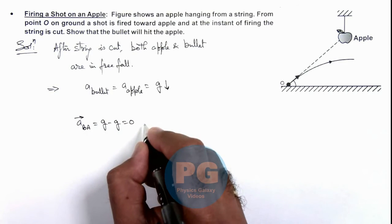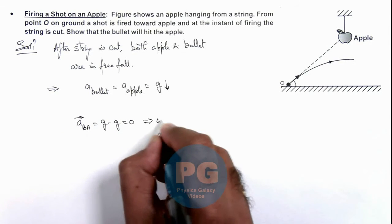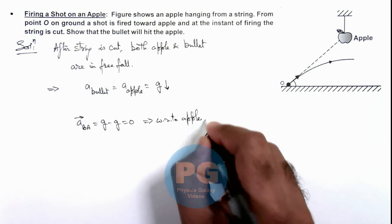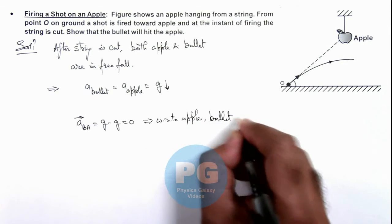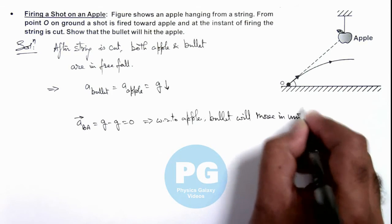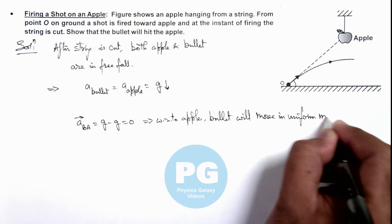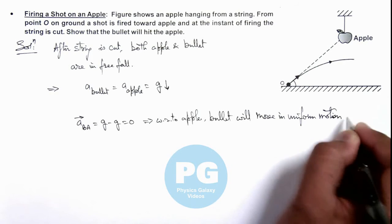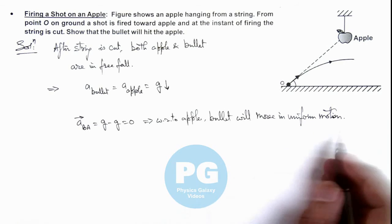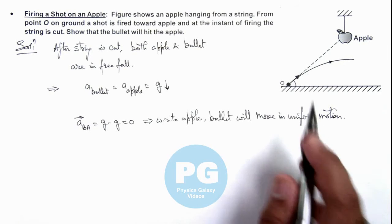That means with respect to apple, bullet will move in uniform motion. As we already studied, if acceleration of one body with respect to other is zero, the body will have uniform motion with respect to the other body.